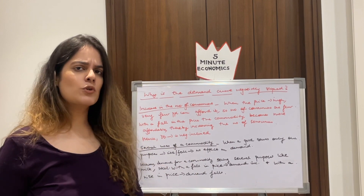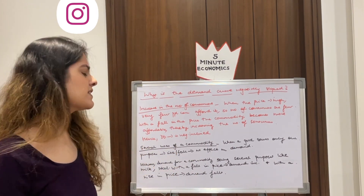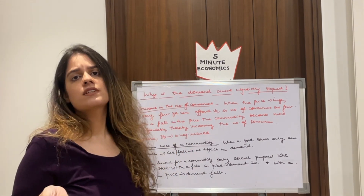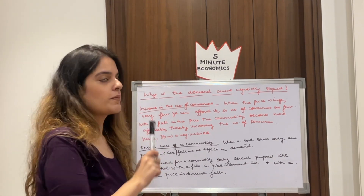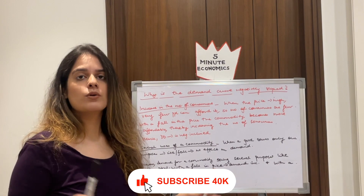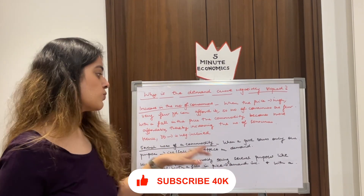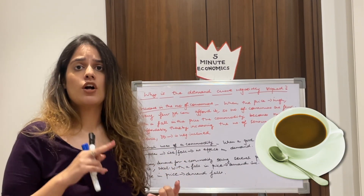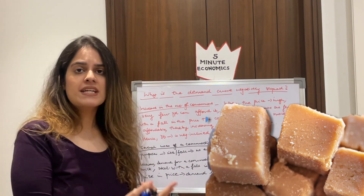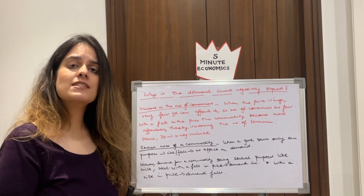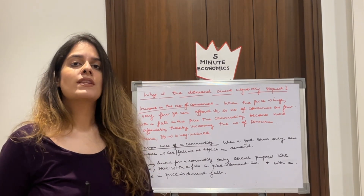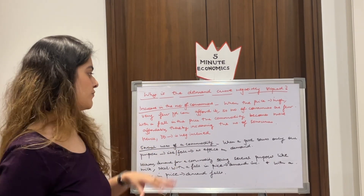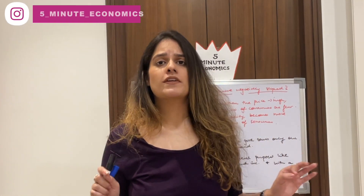The last reason is several uses of a commodity. Some goods have only one particular use — for example, whiteboard markers are solely used to write on a whiteboard, so a price change has little effect on their demand. But goods like milk are used for tea, coffee, sweets, ice cream, and more. As the price of milk falls, demand rises; as price rises, demand falls — justifying the shape of the demand curve.